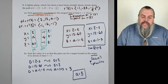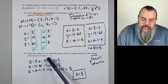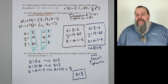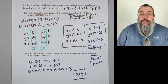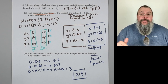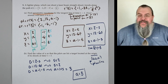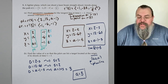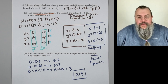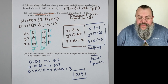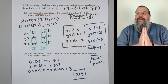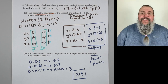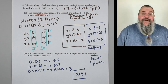Coincidences are really dangerous in math because you feel like there's a rule when really it's just a coincidence. Anyway, focus — we still have two more problems. Let's get this done.